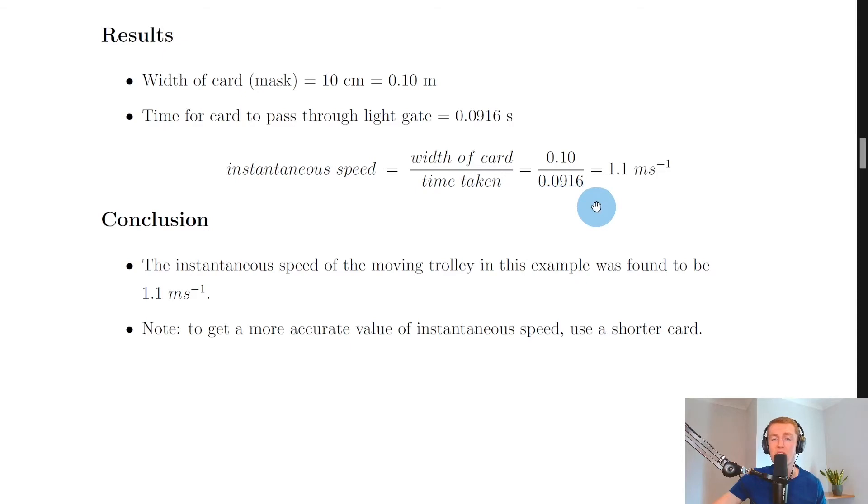At the particular moment of time where the light gate was positioned, the instantaneous speed of the trolley was found to be 1.1 meters per second at that point. To conclude our aim, the instantaneous speed of the moving trolley in this example was found to be 1.1 meters per second.